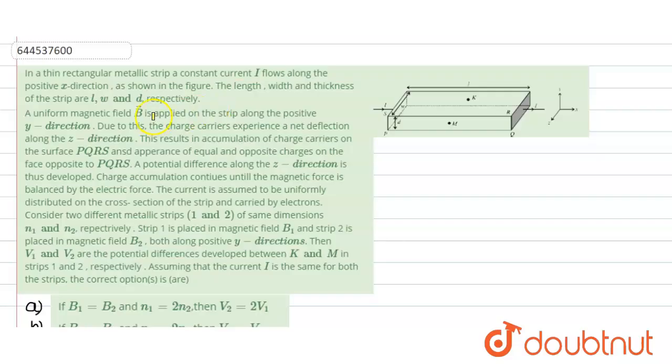Hello everyone, let us start with our question. In this question it is given that there is a thin rectangular metallic strip which is having a constant current I which is flowing through the positive x direction as shown in the figure. That means in this direction there is a current which is flowing. Now the length, width and the thickness of the strip are given as to be L, W and D respectively. There is a uniform magnetic field B which is applied on the strip along the positive y direction. So this is our y direction.